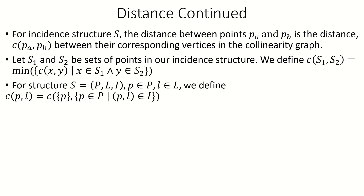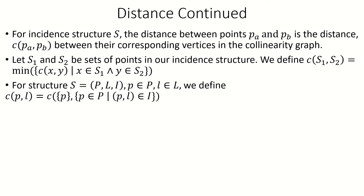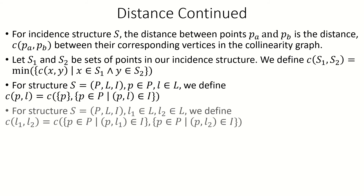Moving on, if we have a line L and a point P, we can define the distance between P and L to be the distance between the singleton set containing point P and the set of all points that are incident to L, using the definition of distance between sets of points that we just covered. We can build off that definition again to define distance between a pair of lines: the distance between a pair of lines is defined to be the distance between the set of points incident to each line.